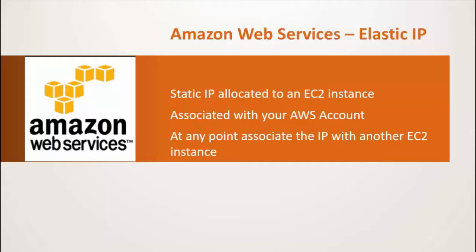Today we're going to be talking about another web service provided by Amazon which is known as Elastic IP. Elastic IP is nothing but a static IP that's allocated to your EC2 instance. One thing to note is that the Elastic IP is associated with your AWS account and not with an EC2 instance.